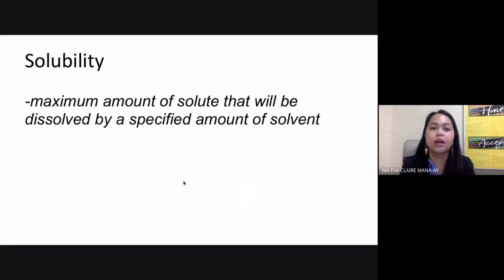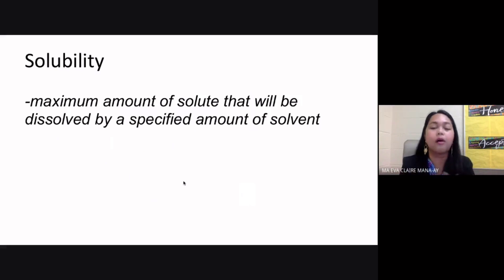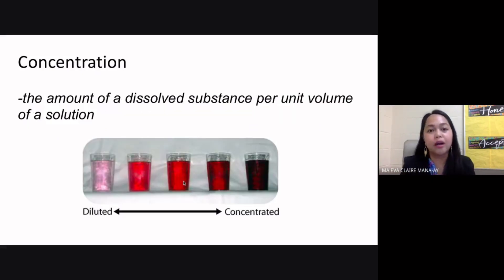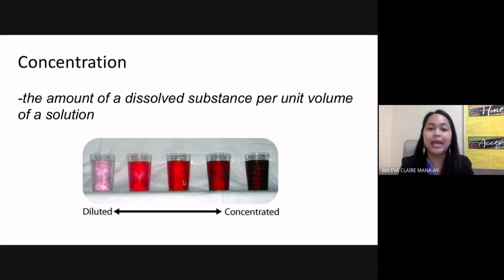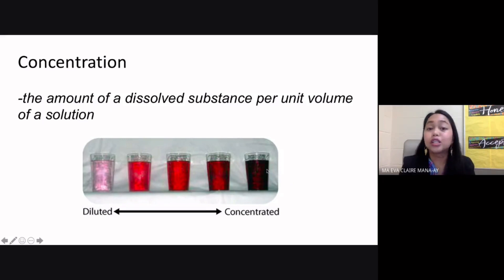The next term is solubility — the maximum amount of solute that will be dissolved by a specified amount of solvent. There is actually a limit to the amount of solute your solvent can dissolve, and we call that its solubility. Another term is concentration: the amount of a dissolved substance, or solute, per unit volume of a solution. A solution with very little solute is called diluted, while one with too much solute is called concentrated.